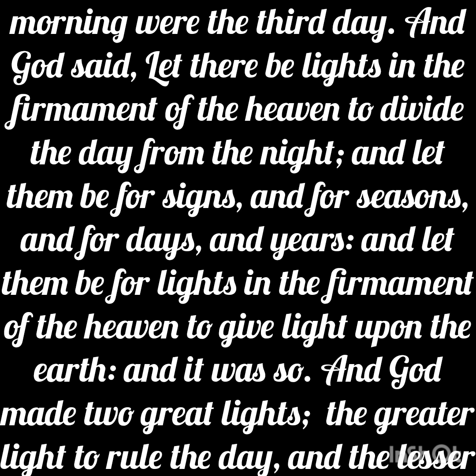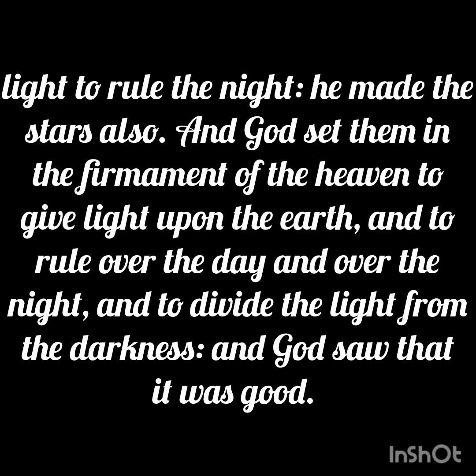And God said, let there be lights in the firmament of the heaven to divide the day from the night, and let them be for signs and for seasons and for days and years. And let them be for lights in the firmament of the heaven to give light upon the earth, and it was so. And God made two great lights — the greater light to rule the day, and the lesser light to rule the night. He made the stars also, and God set them in the firmament of the heaven to give light upon the earth, and to rule over the day and the night, and to divide the light from darkness. And God saw it was good.